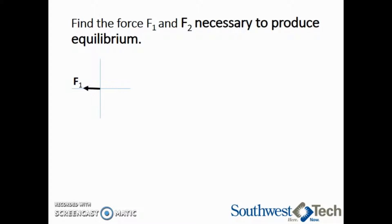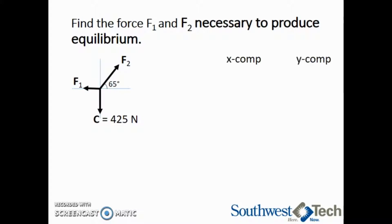We have F1 acting in the negative x direction, F2 is acting at an angle of 65 degrees, and force C is 425 newtons acting in the negative y direction. In order to find the missing forces to produce equilibrium, we need to separate all of the forces into their x and y components.